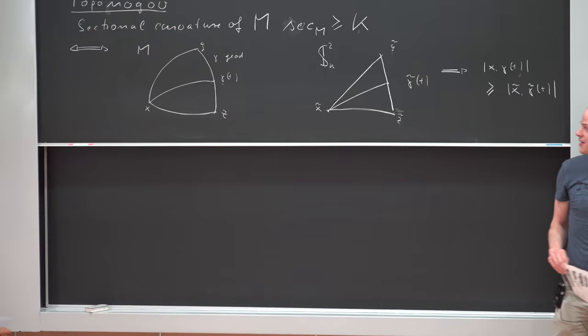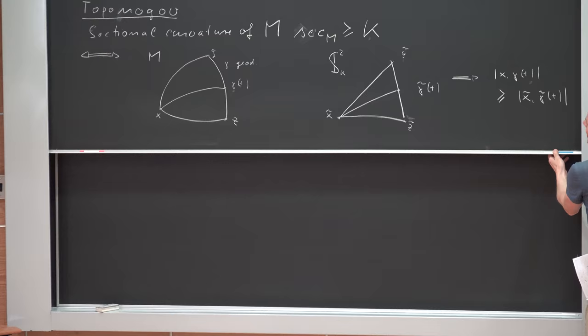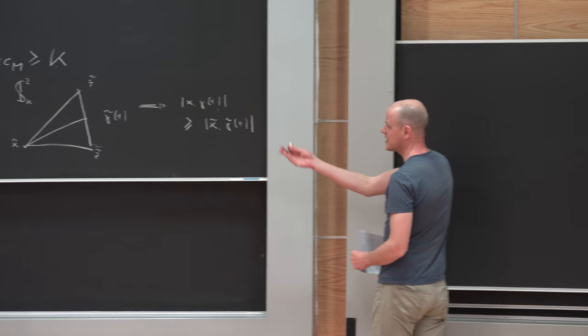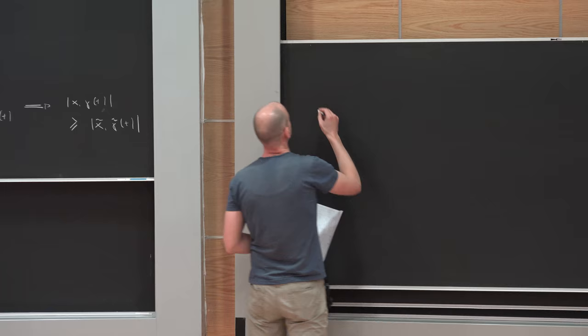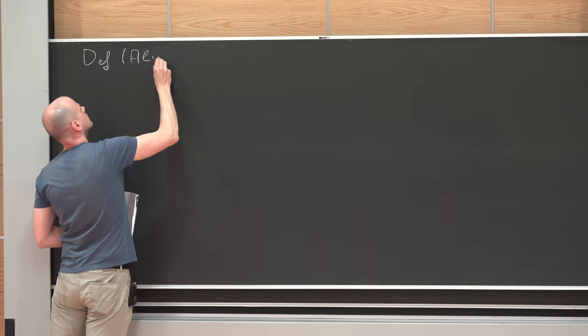Between Y and Z we choose a geodesic and pick some T-midpoint. We pick the same T-midpoint between Y-tilde and Z-tilde in the comparison space, then look at the distance between X and this T-midpoint in both triangles. The distance between X and the T-midpoint in M is bigger or equal than the corresponding distance in the comparison triangle. This property only involves distances and geodesics.